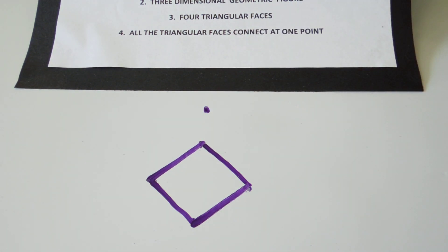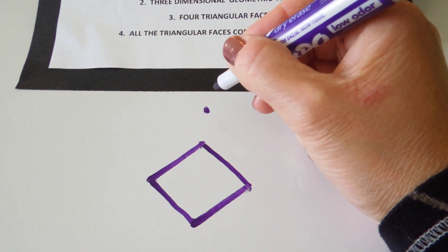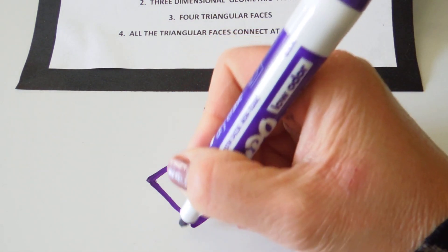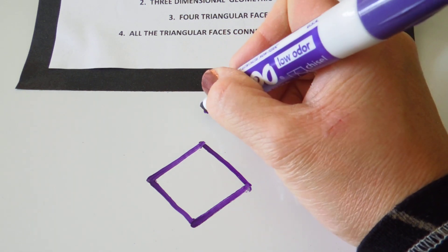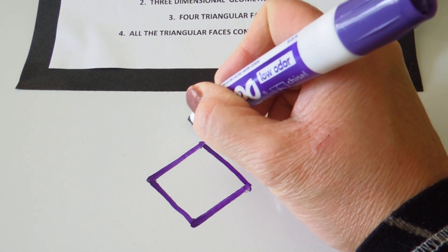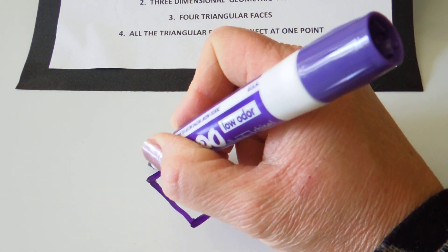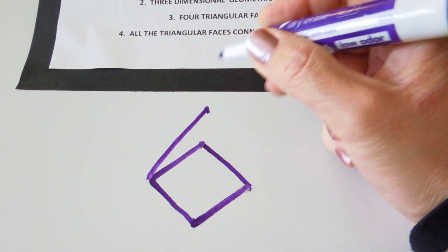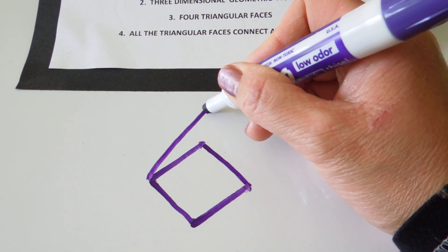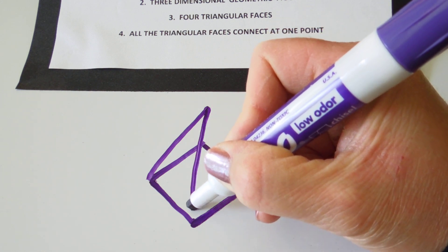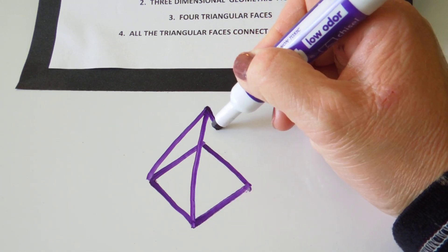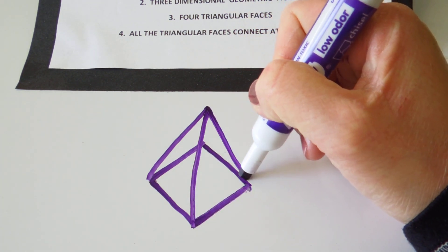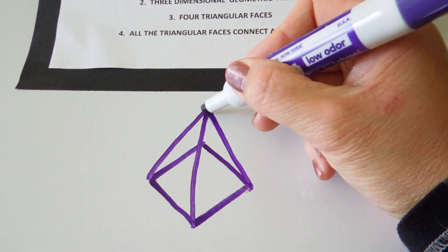Then I'm going to connect that point with all the corners — these are all corners — drawing as straight but diagonal lines as possible.